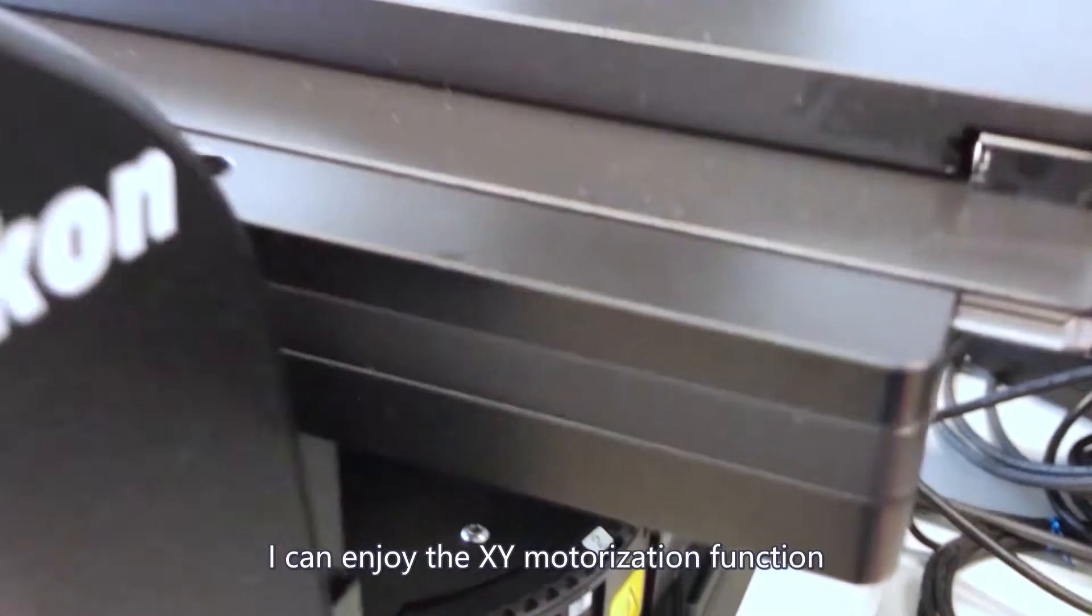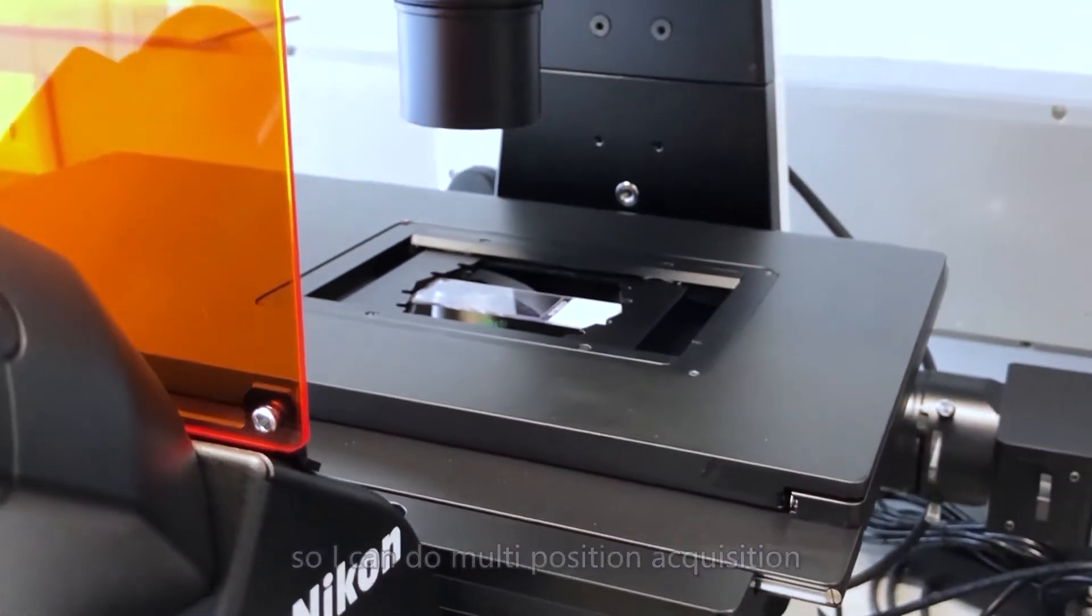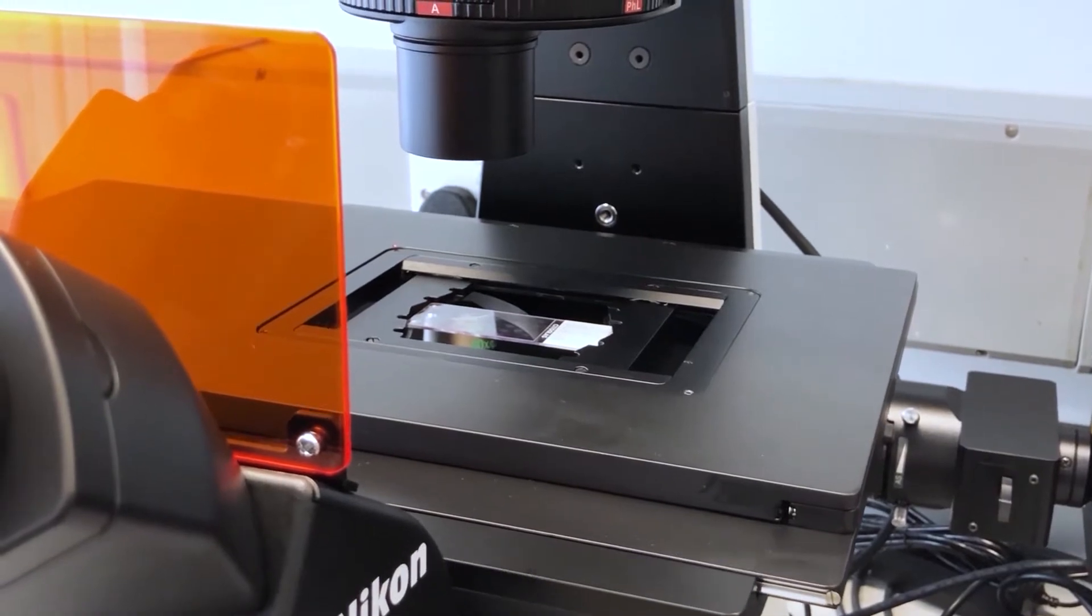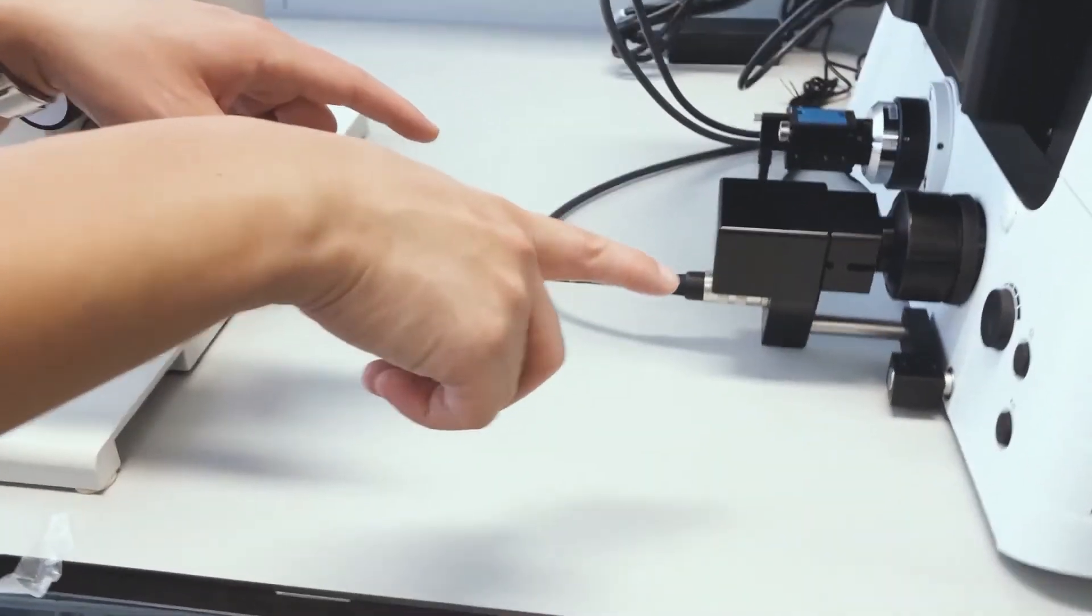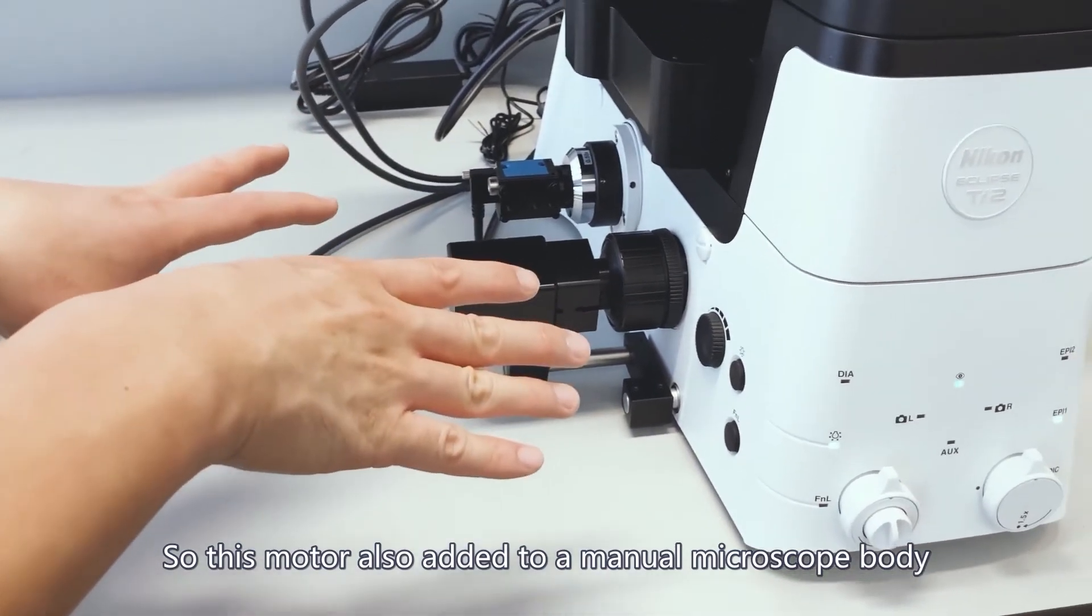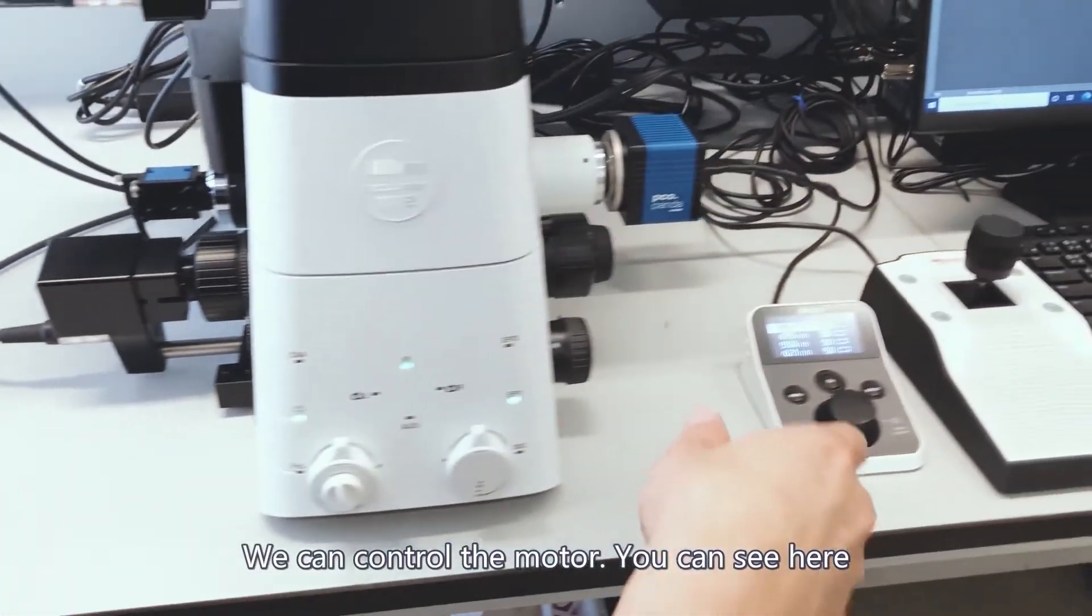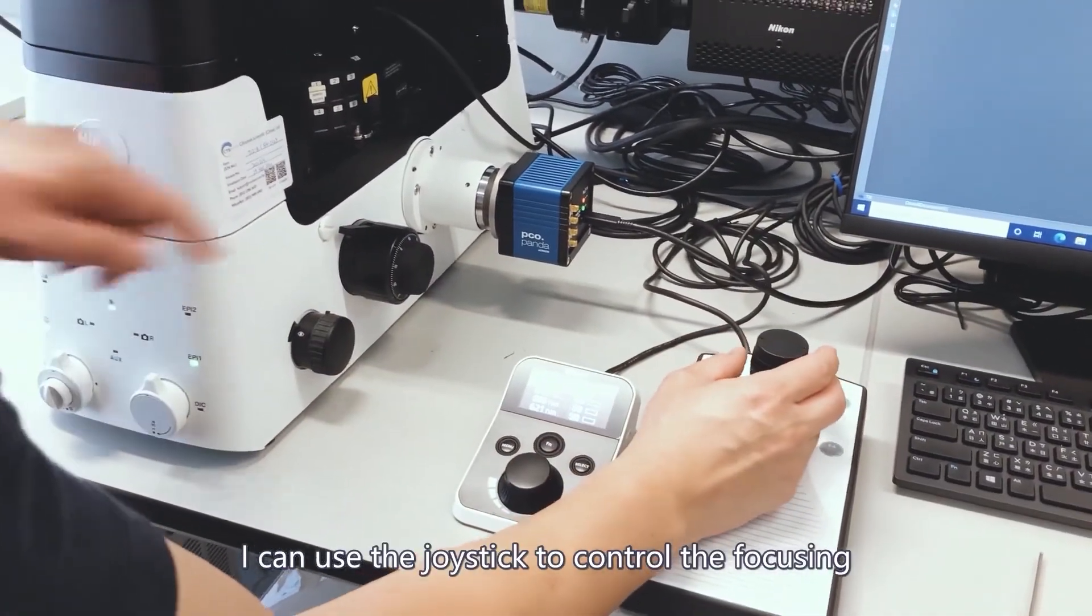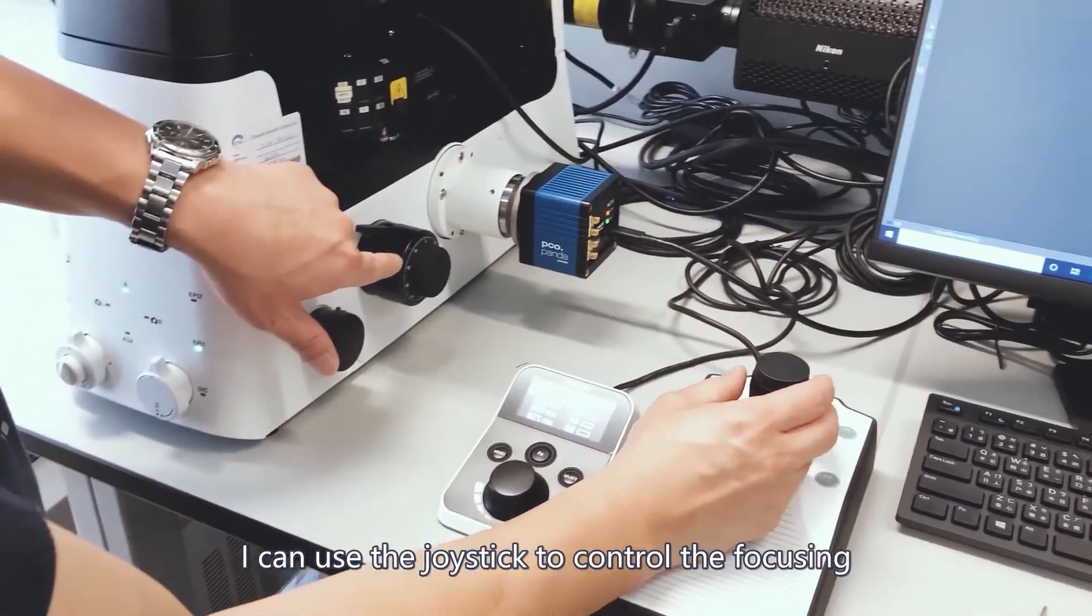And I also added an external Z motor. So this motor is also added to the manual microscope body. We can control the motor. You can see here. I can use the joystick to control the focusing.